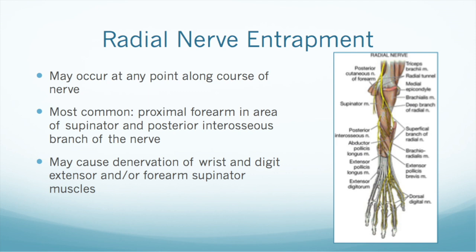Our presentation is on radial nerve entrapment. This can occur at any point along the nerve, but it most commonly happens in the proximal forearm area around the supinator muscle where the posterior interosseous branch of the radial nerve is. It can also occur more proximally with a humerus fracture or more distally on the radial aspect of the wrist. This can cause denervation of different wrist or digit extensors, but particularly the forearm supinator muscles are affected.